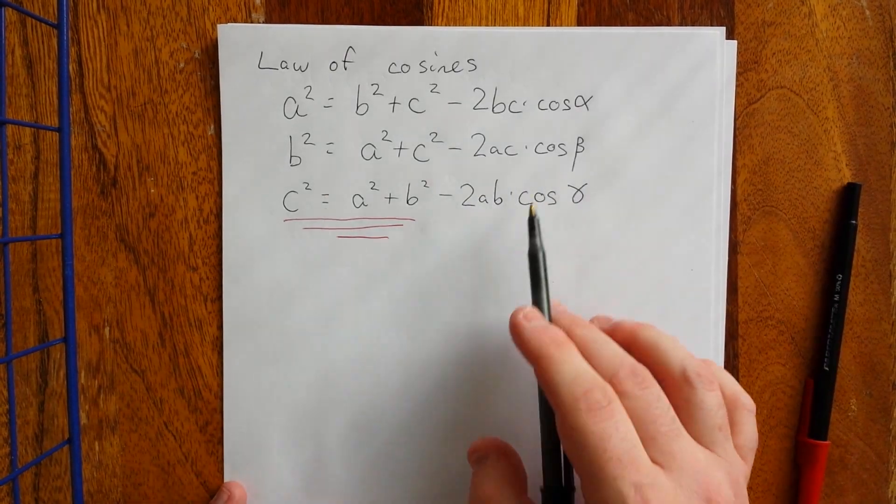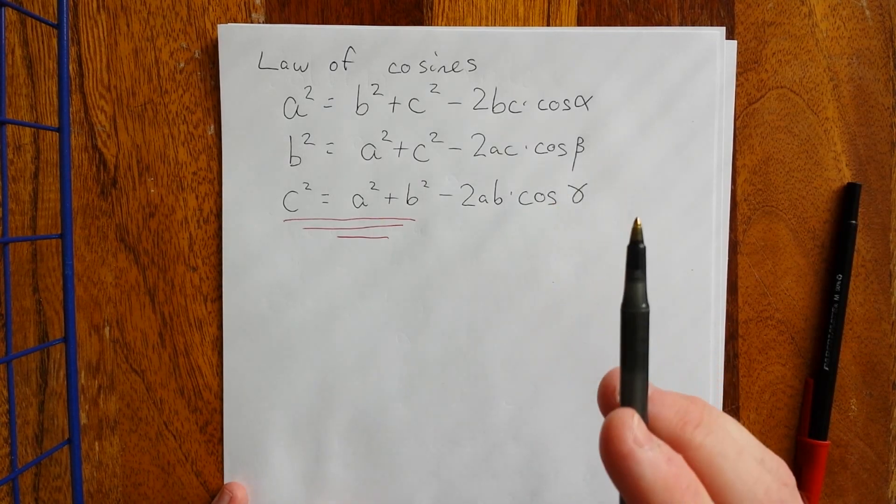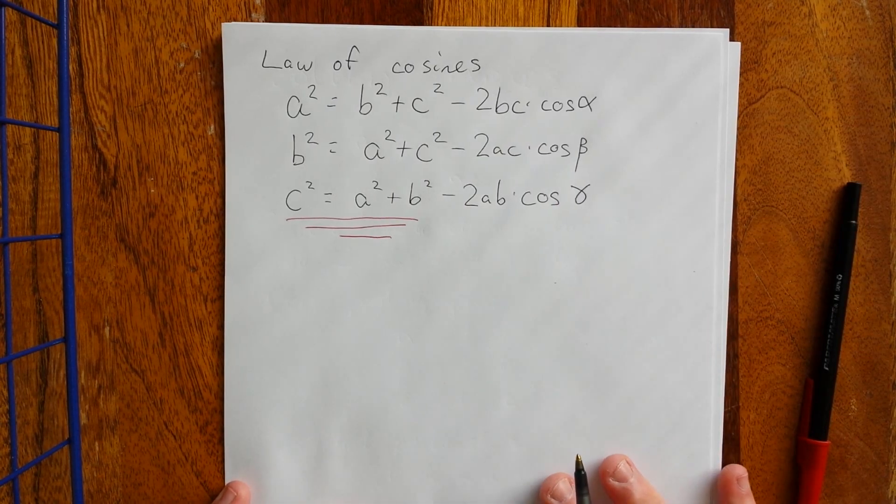The Pythagorean theorem is actually a special case of the law of cosines for when you're dealing with a right triangle. This is the more general rule. So that's going to be an important thing to have.